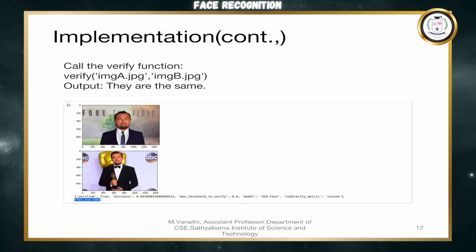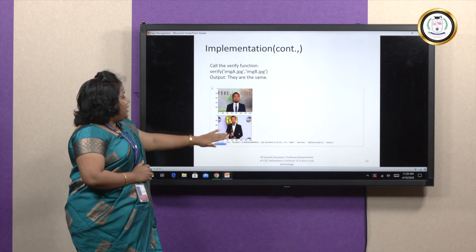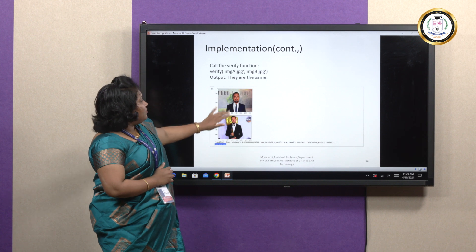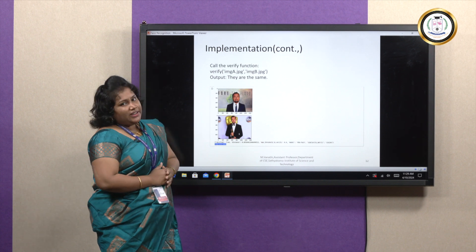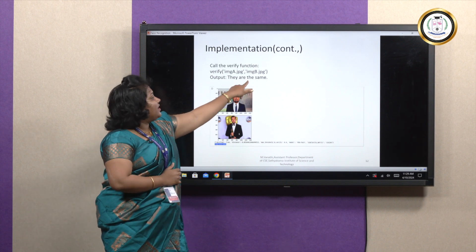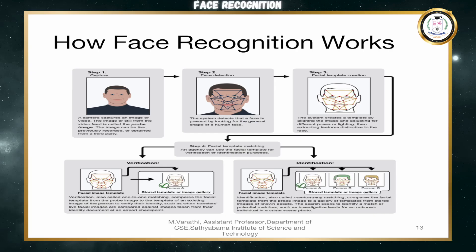You can see this is our final output. We gave the first image and the second image. It plots image one and image two, and since both images are verified as the same, the output is they are the same. This is how face recognition works in DeepFace.